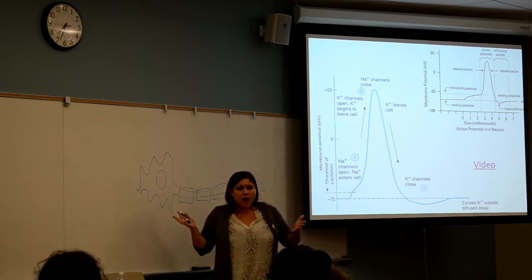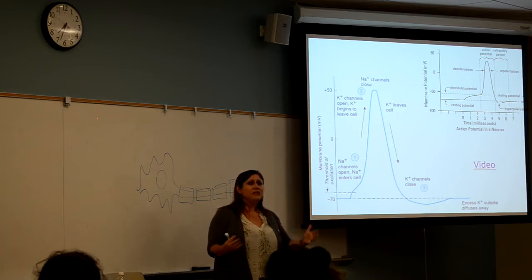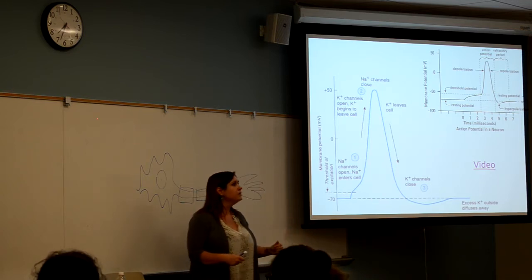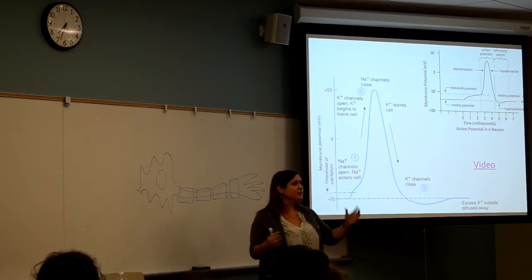The neuron, much like the male anatomy, gets excited by stimulation. Stimulation comes into the neuron. Stimulation occurs to the male anatomy. It gets excited.